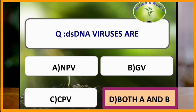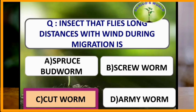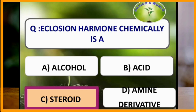Thermal constant is expressed in degree days. The insect that flies long distances with wind during migration is cutworm. Ecdysion hormone is chemically a steroid. Mango mealybug is univoltine.